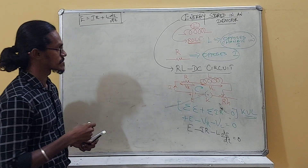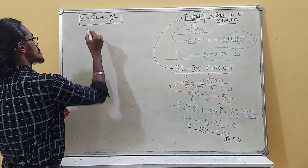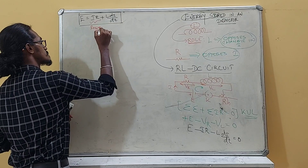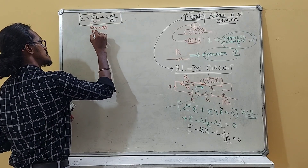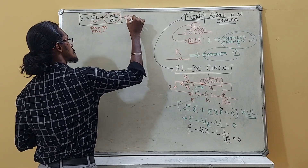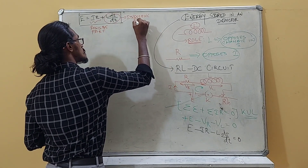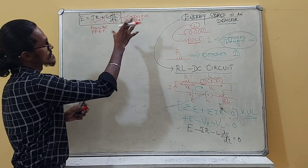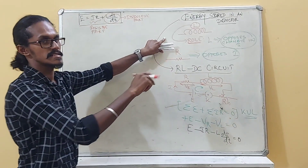This EMF equation has two parts: IR is the resistive part, and L(dI/dt) is the inductive part. We focus on the inductive part because energy is stored in the inductor via the magnetic field.